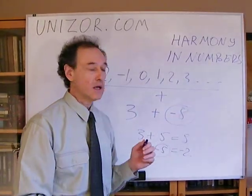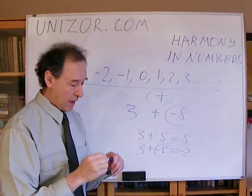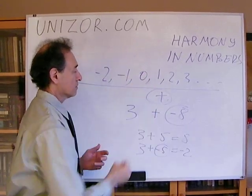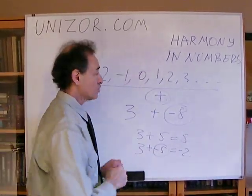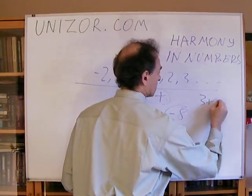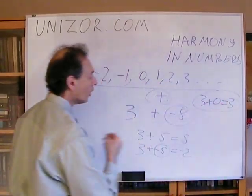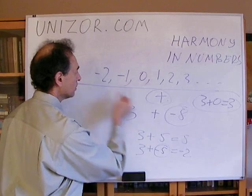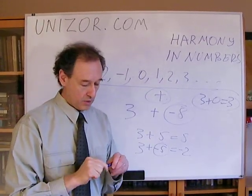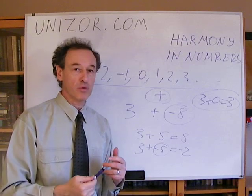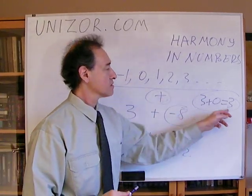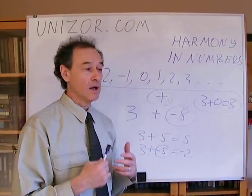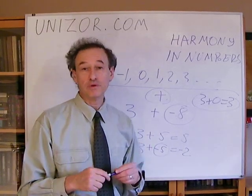So you have a certain set of elements, you have an operation, and what's important is you can always have an element which, when applied to any other element, leaves it unchanged — like three plus zero is still three. And you can always apply any element to any other element and still remain within this group. So a reverse operation is always very, very important, and the identity operation which doesn't change anything is also very important. The theory becomes symmetrical and in a way more beautiful, at least for some people.